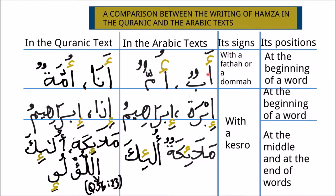In the Arabic text, Abun, which means a father, is a word that starts with a Hamza that is written upon an Alif, and the Hamza has a Fatha sign. And Ummun, which means a mother, starts with an Alif which has Hamza written upon it, because the Hamza carries a Damma sign.